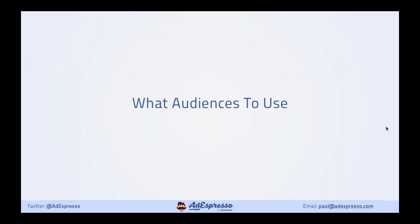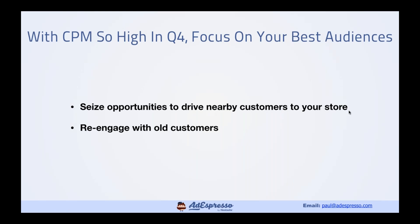For audiences in phase two, the main event, try and drive customers to your store and use your best audiences — re-engage old customers and anyone who's engaged with you. Something worth noting: in the US, over 90% of commerce still happens in-store. E-commerce is still quite small. If you're a bricks-and-mortar business, don't get obsessed with converting everybody online — think about how you can combine Facebook and Google ads with offline as well. Even in the UK, around 85% of commerce is still offline.